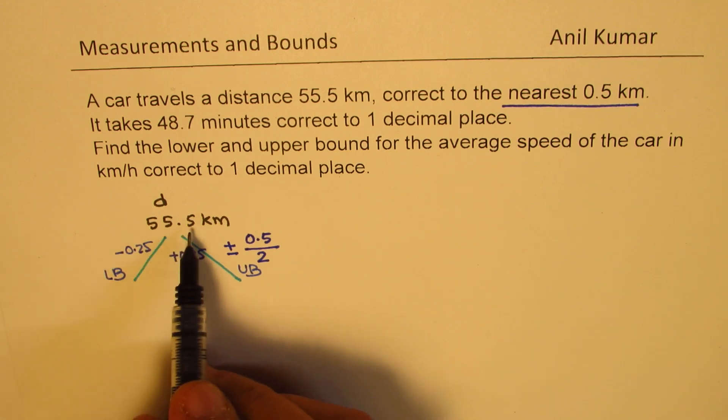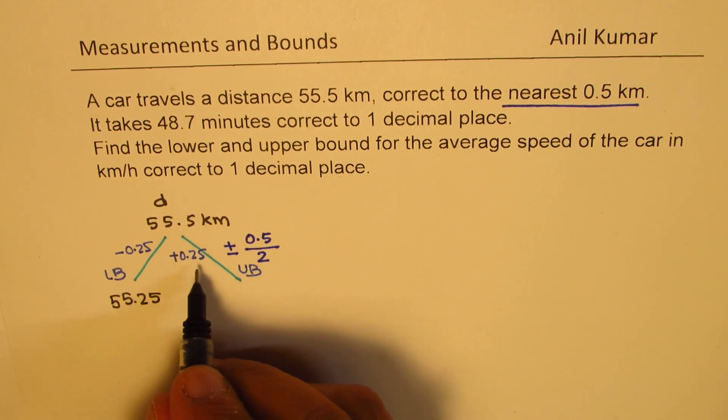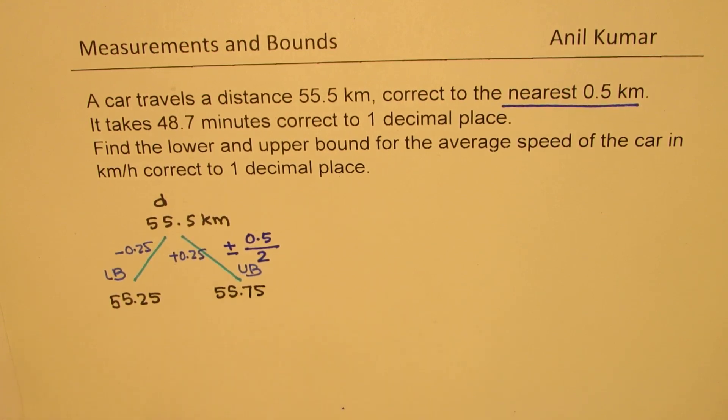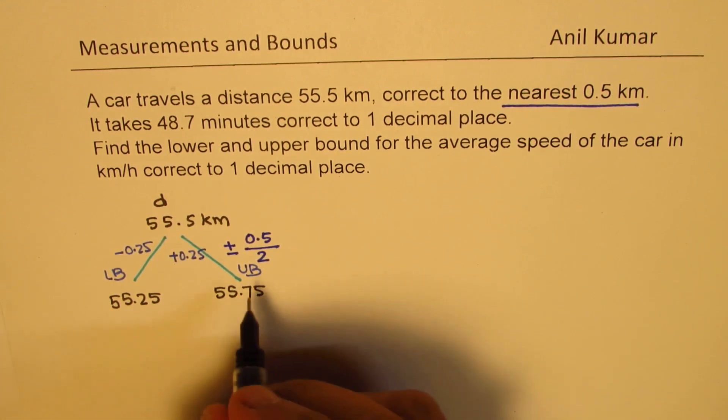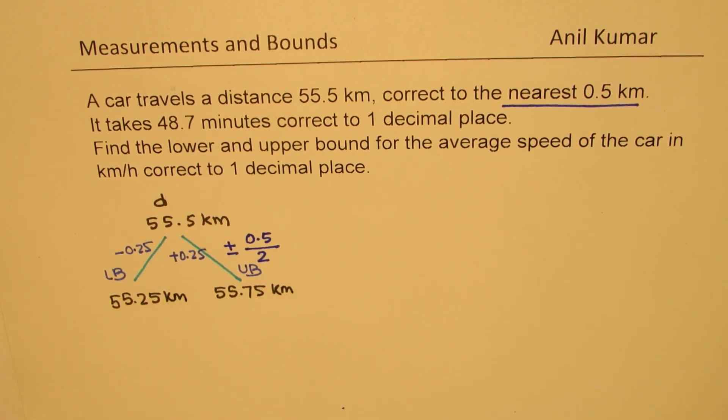So, let's take away 0.25. In that case, we get 55.25. And here, when we add 0.25, we get 55.75. Both are in kilometers. So those are the upper bounds and the lower bounds for the distance.